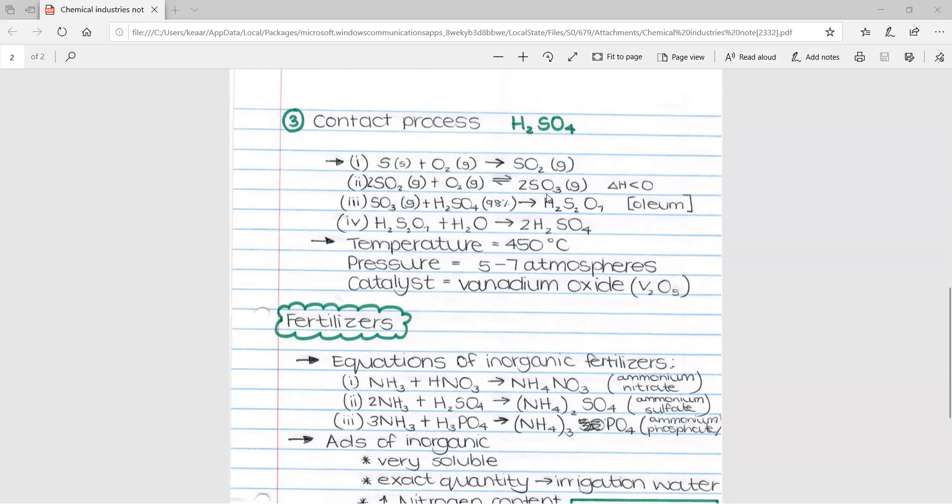Then we take our SO3 and use it in our third reaction. SO3 plus H2SO4 to form H2S2O7, which is oleum. Note that this H2SO4 is only 98% pure H2SO4. So we use 98% pure sulfuric acid in order to form this.